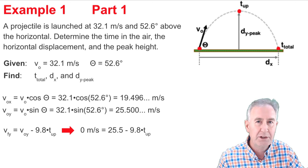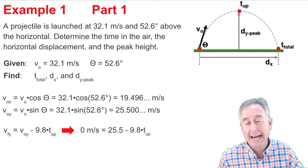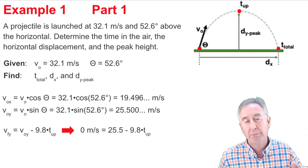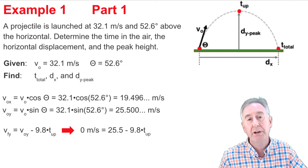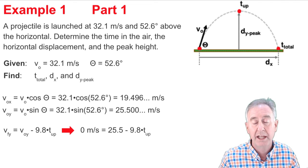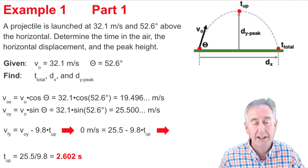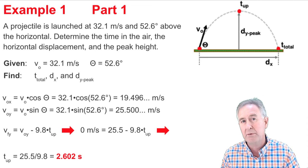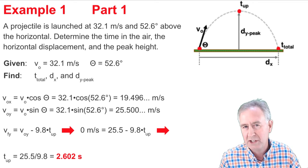Now I have a couple of steps of algebra to do to find the time up value. The first step is I'm going to add 9.8 T to both sides. So the formula becomes 9.8 T up equal 25.5 meters per second. And then the second step is I'm going to divide both sides by 9.8. So T up is equal to 25.5 divided by 9.8. And that comes out to be 2.602 seconds.